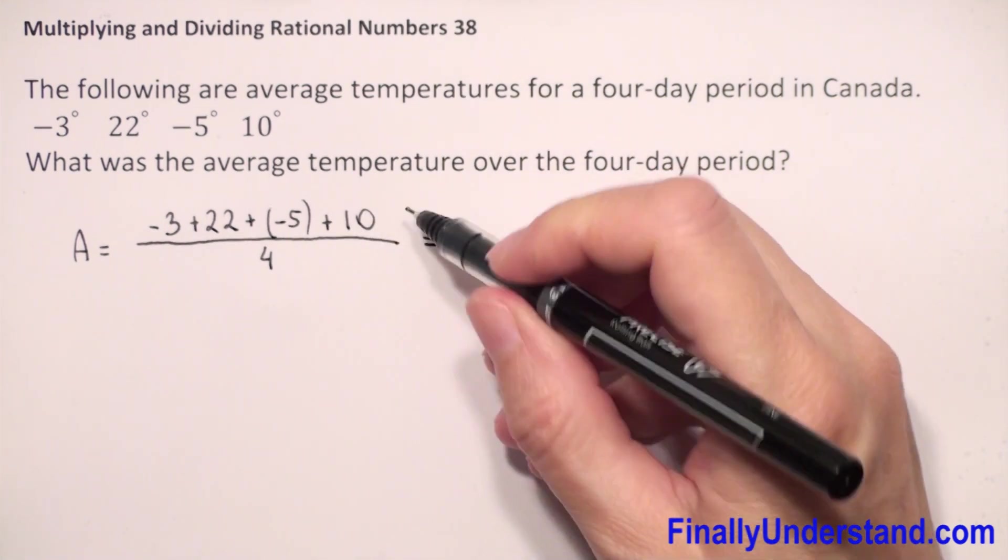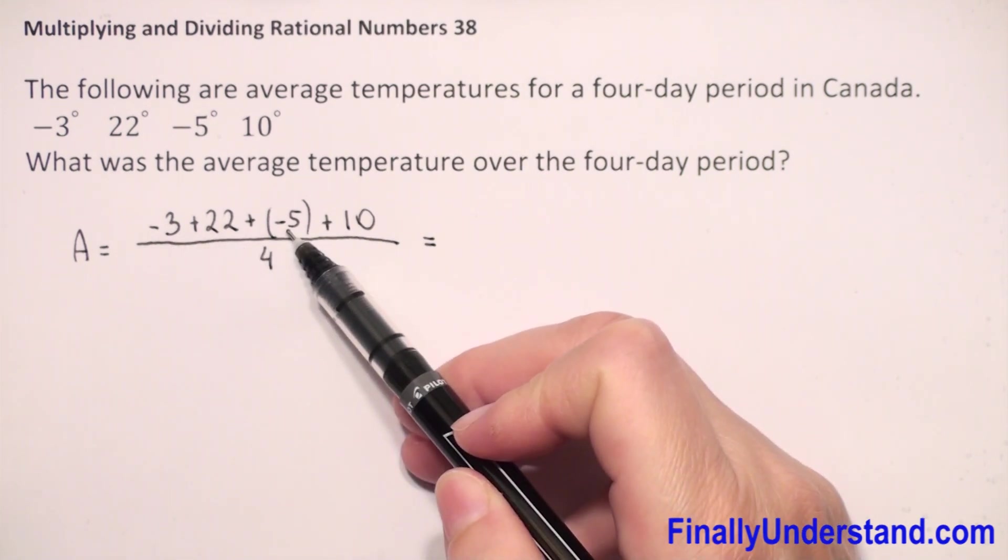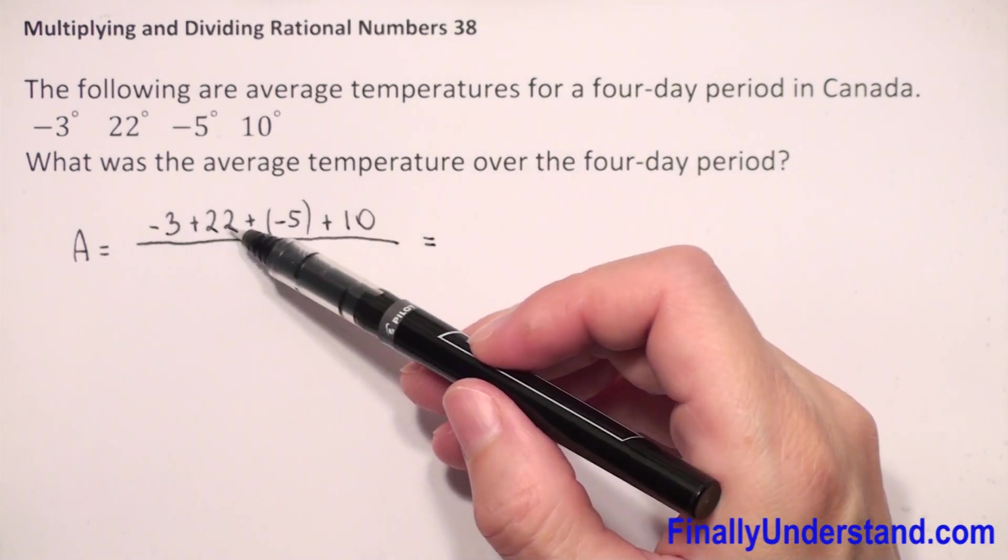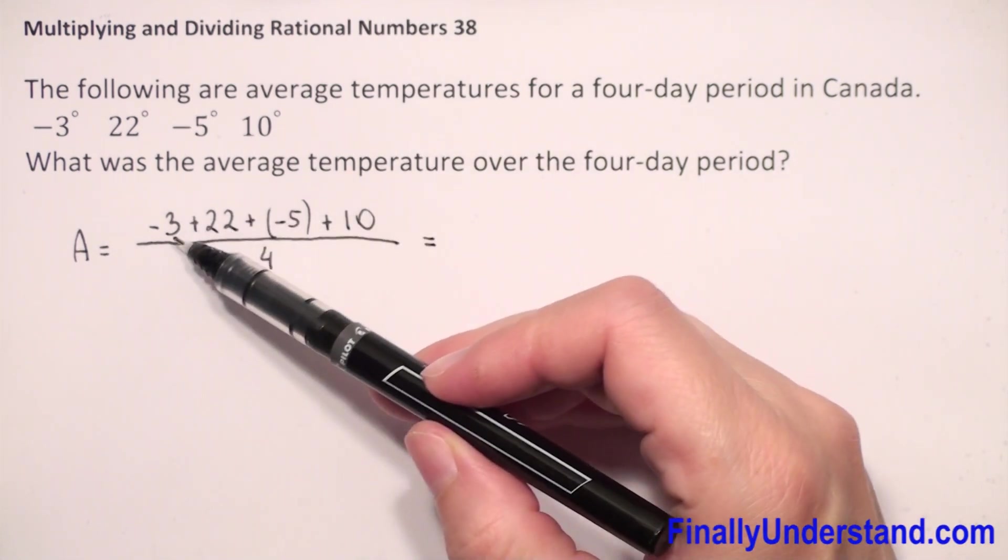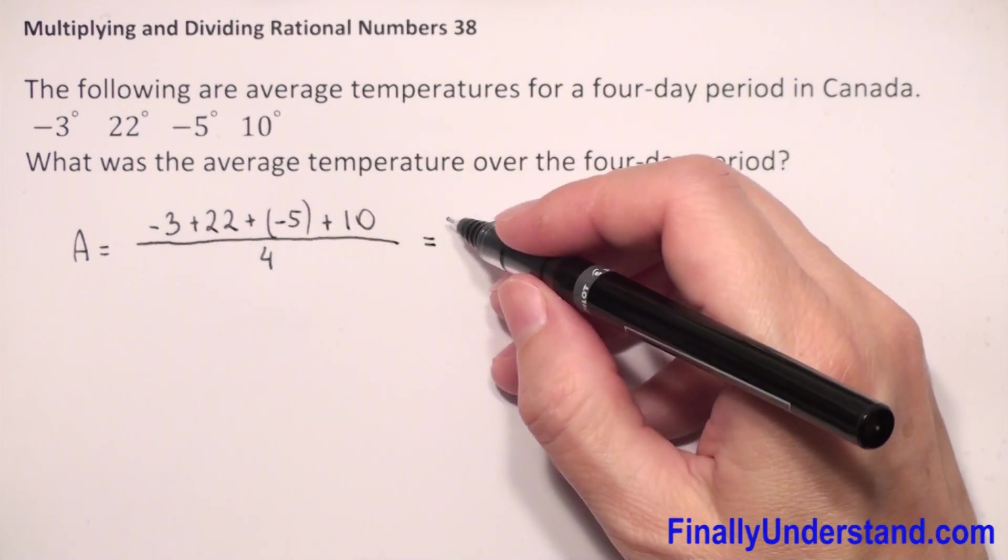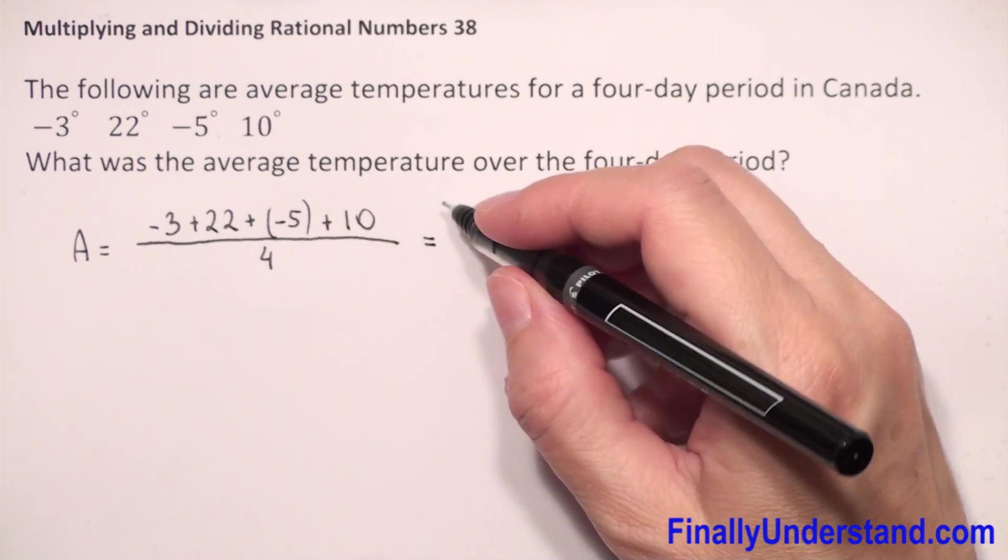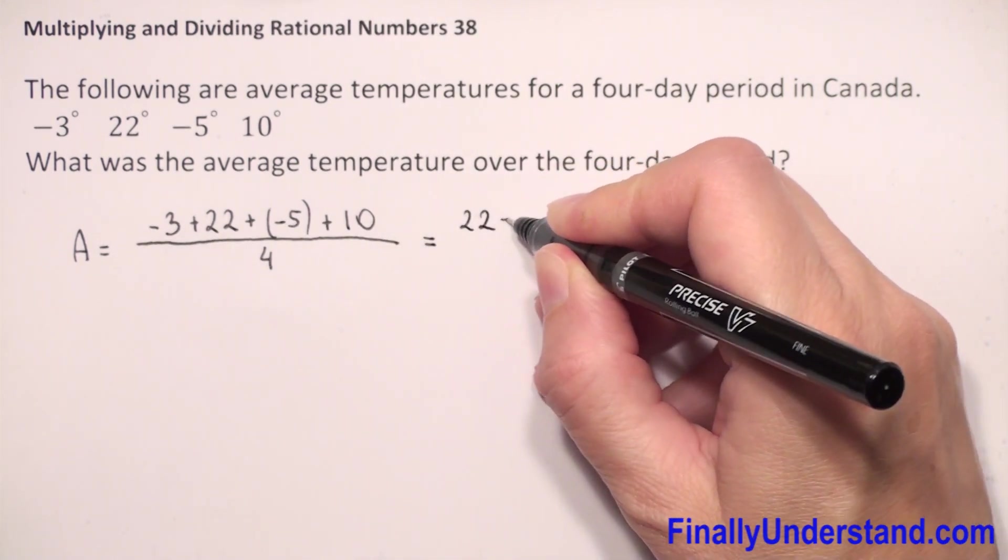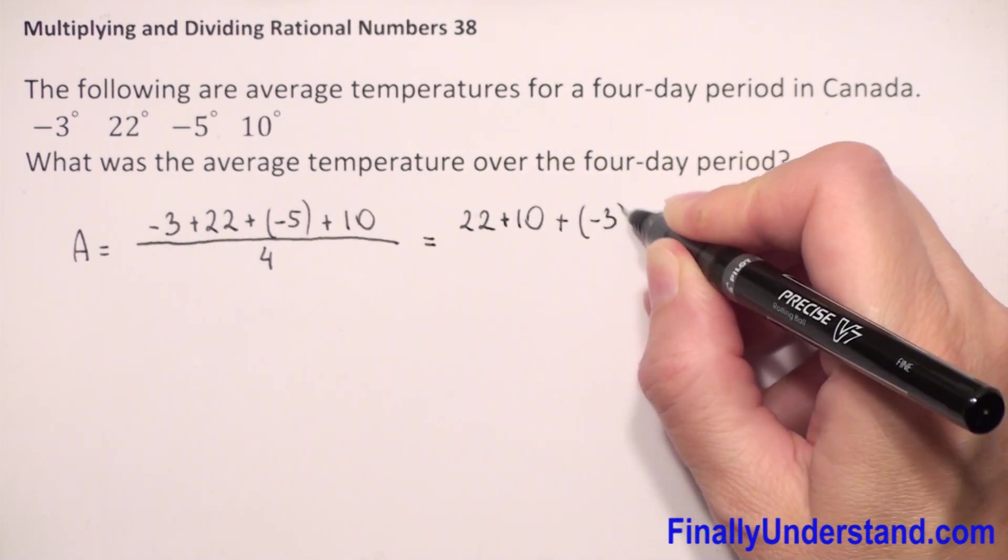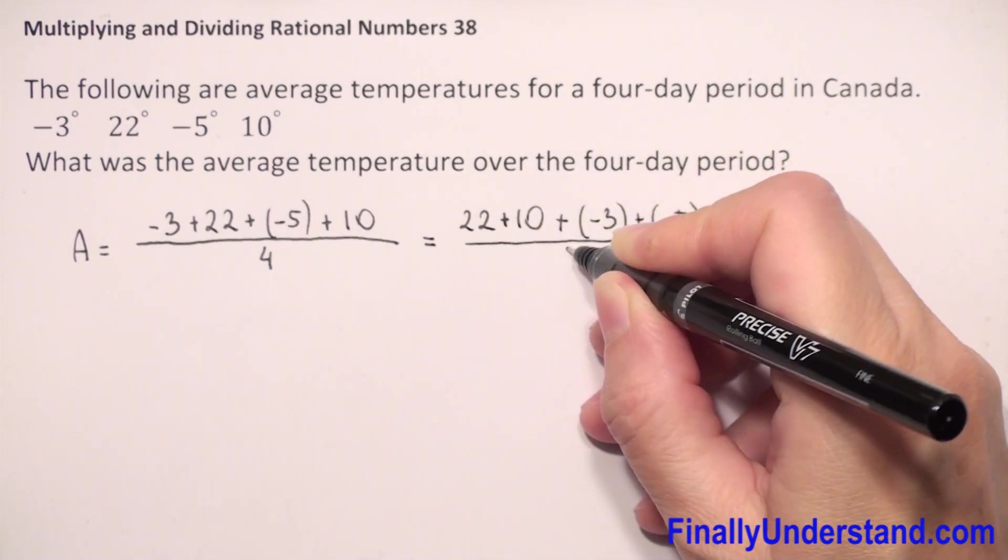So this is equal to... we have negative number plus positive plus negative plus positive. So first let's combine, because we have additions, I can add first 22 and 10 and negative 3 and 5. Let me rewrite this and combine the positive numbers first. So we have 22 plus 10 plus negative 3 plus negative 5, over 4.